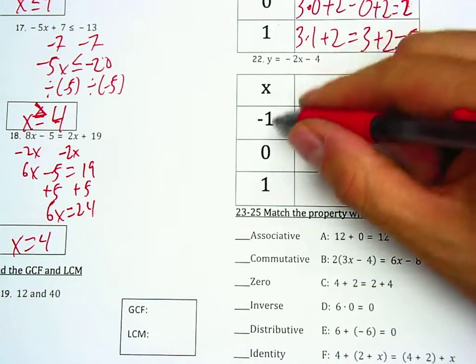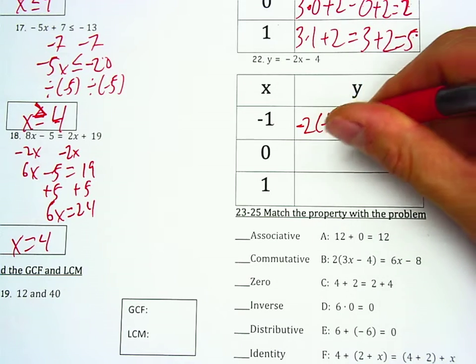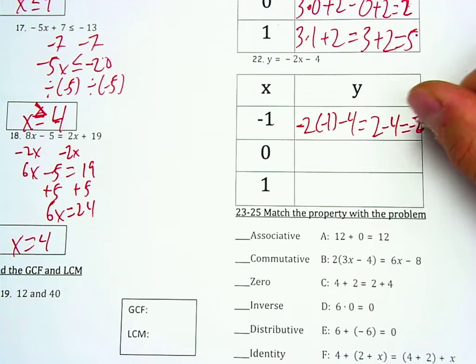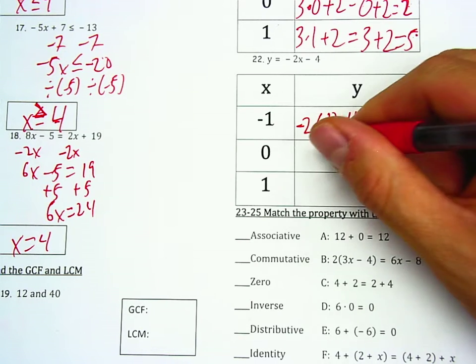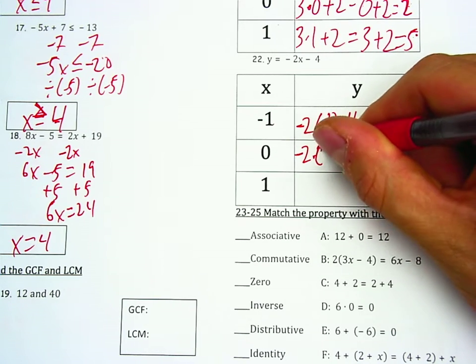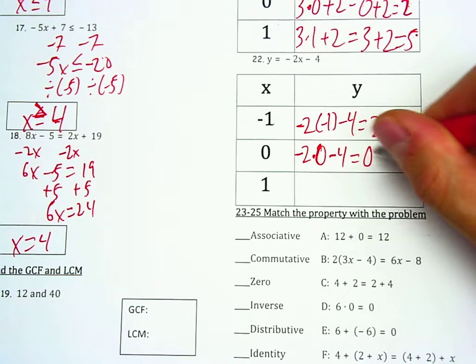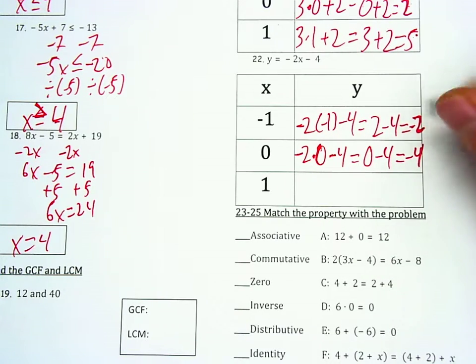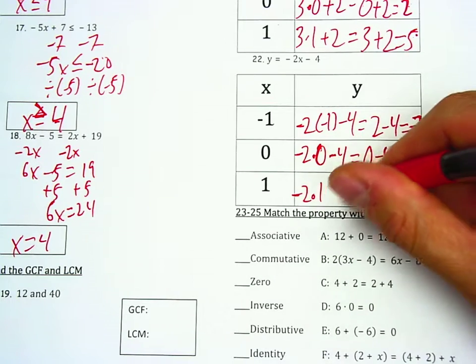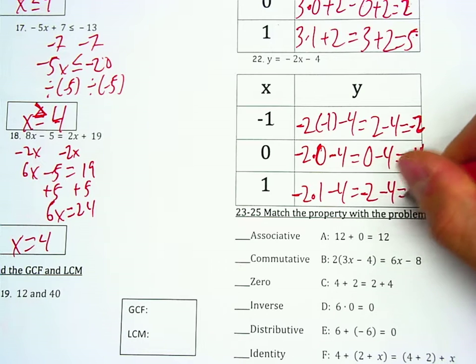Question 22. Substituting negative 1 in for x. So negative 2 times by negative 1 minus 4. So this is 2 minus 4, negative 2. Putting 0 in for x, negative 2 times by 0 minus 4. So this is 0 minus 4. This is negative 4. And putting 1 in for x, negative 2 times by 1 minus 4. Negative 2 minus 4. This is negative 6.